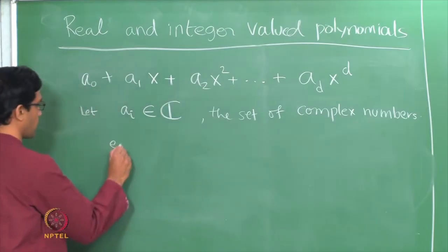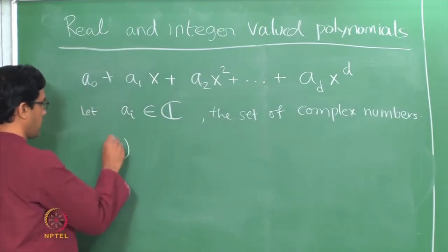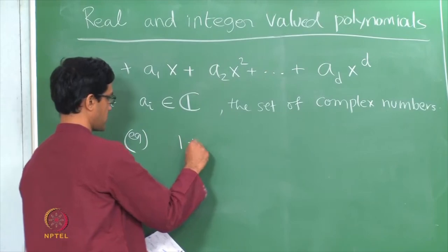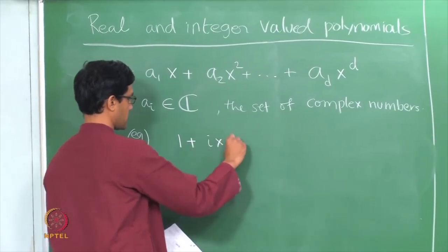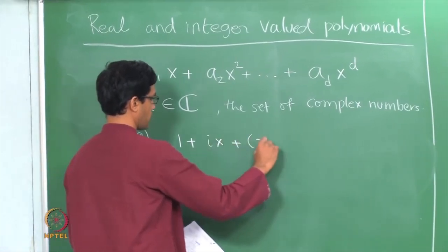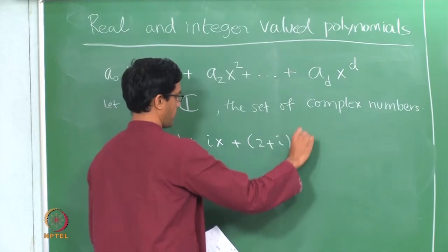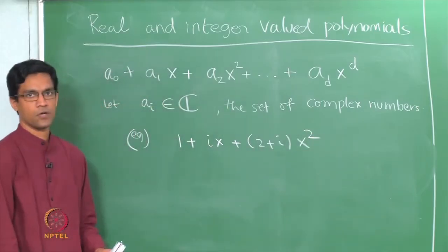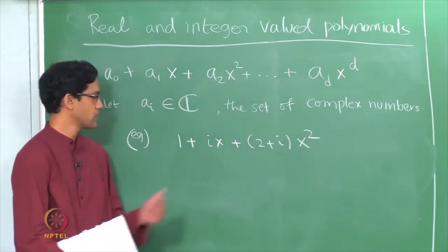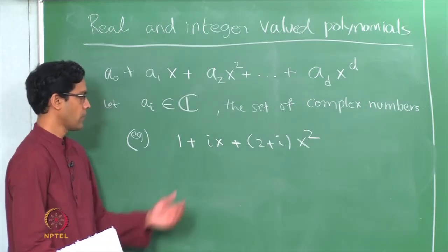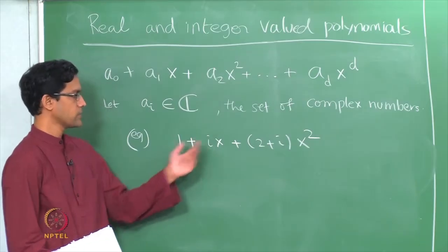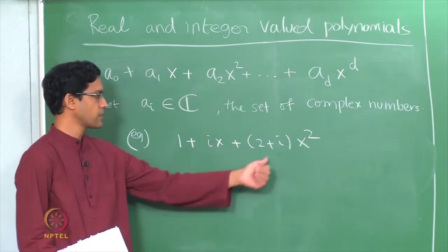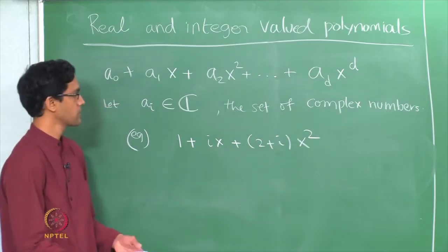A typical example would be 1 plus i times x plus 2 plus i times x squared, where i is of course the complex unit, the square root of minus 1. Here is a polynomial whose coefficients are 1, i, and 2 plus i, which are all complex numbers.